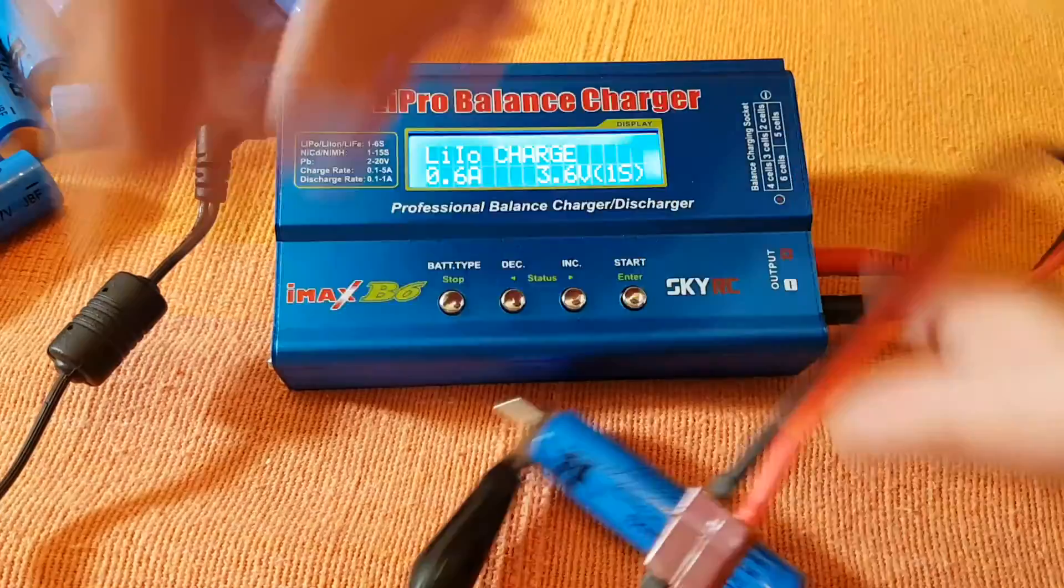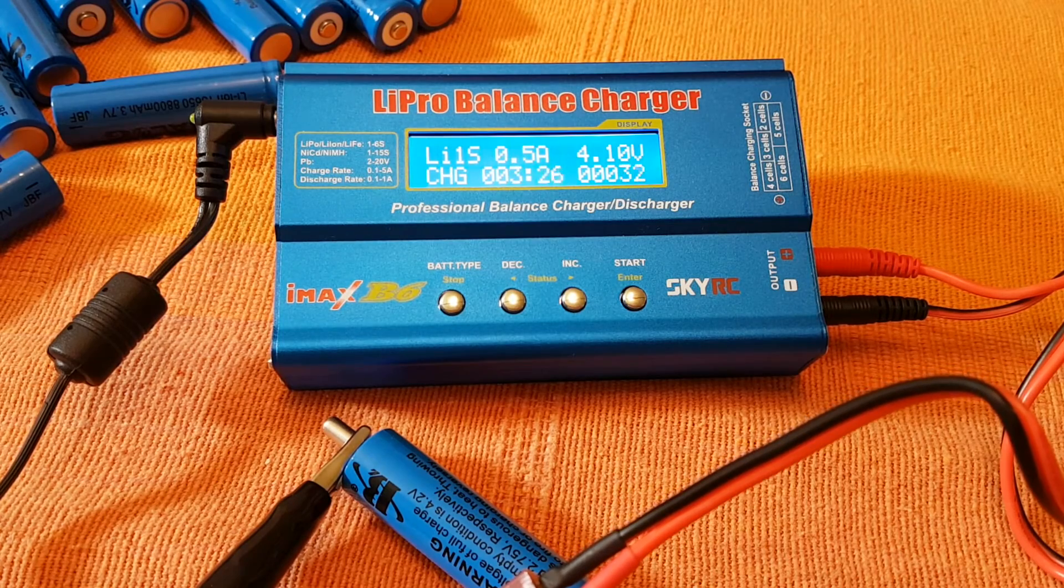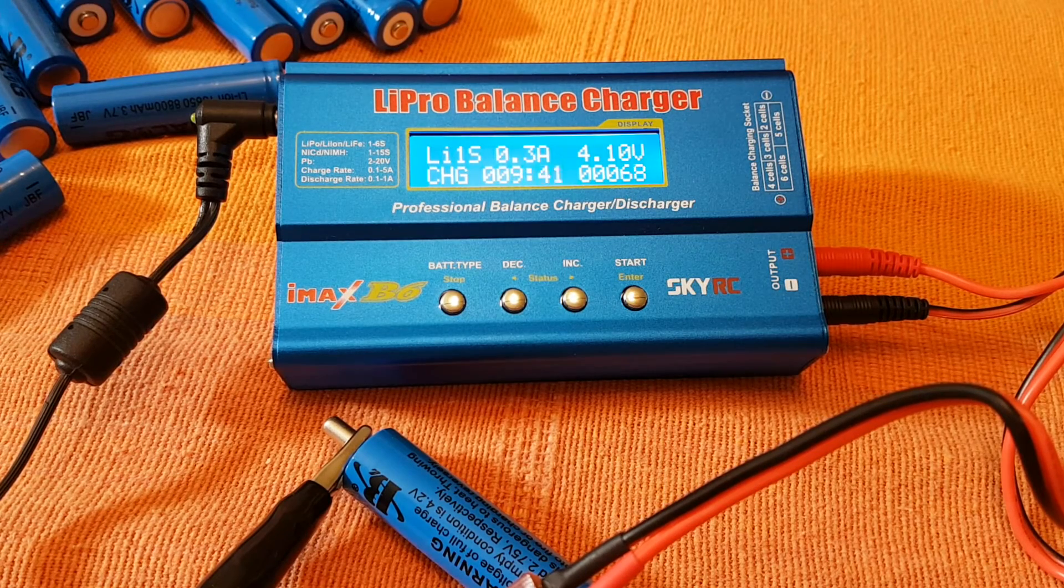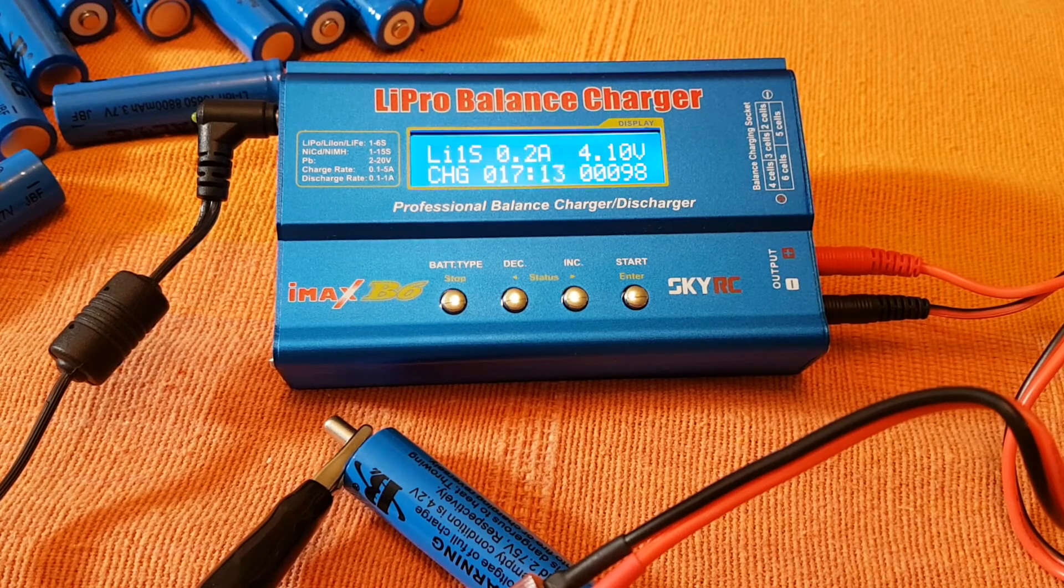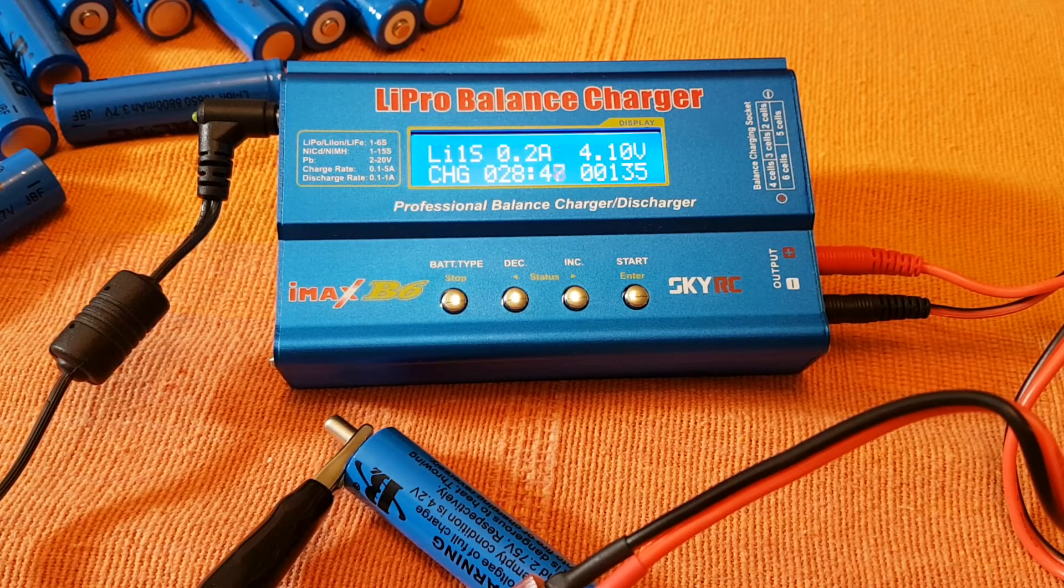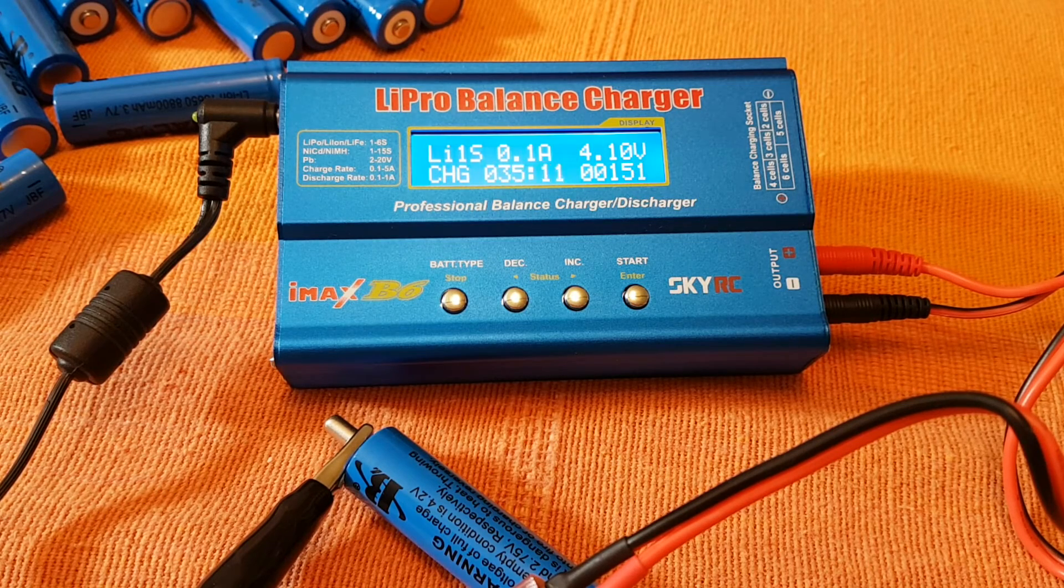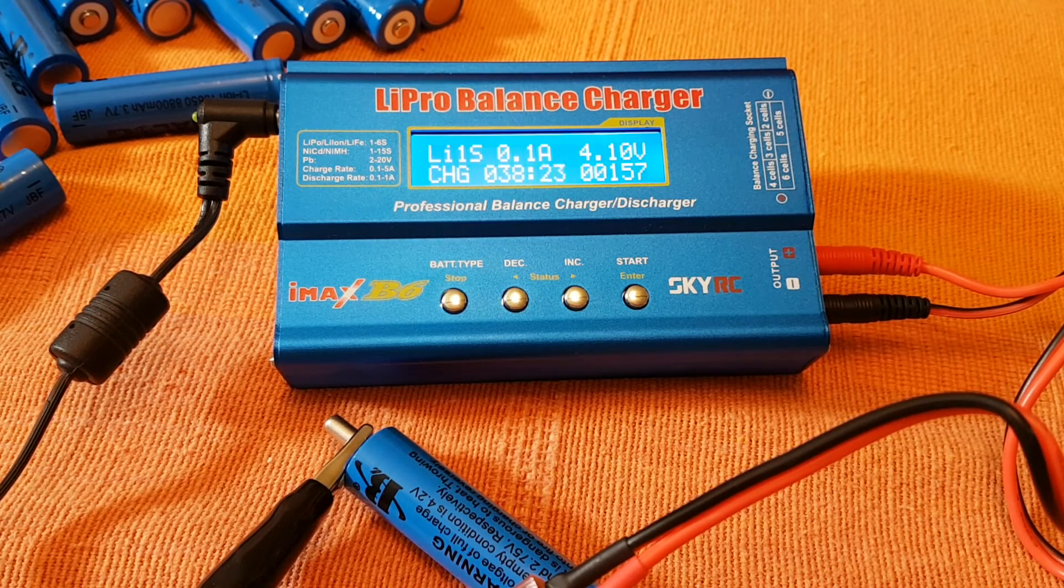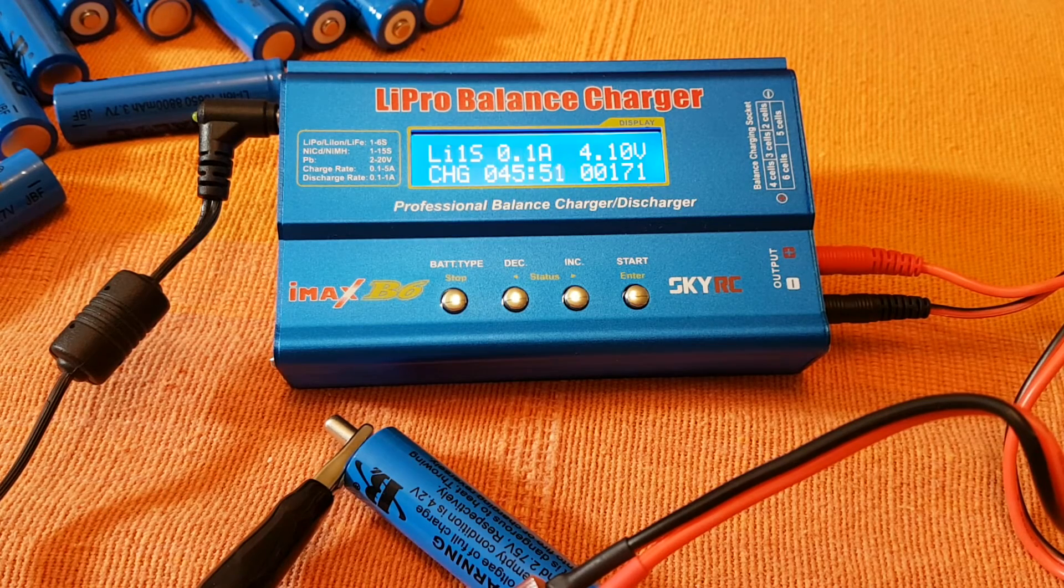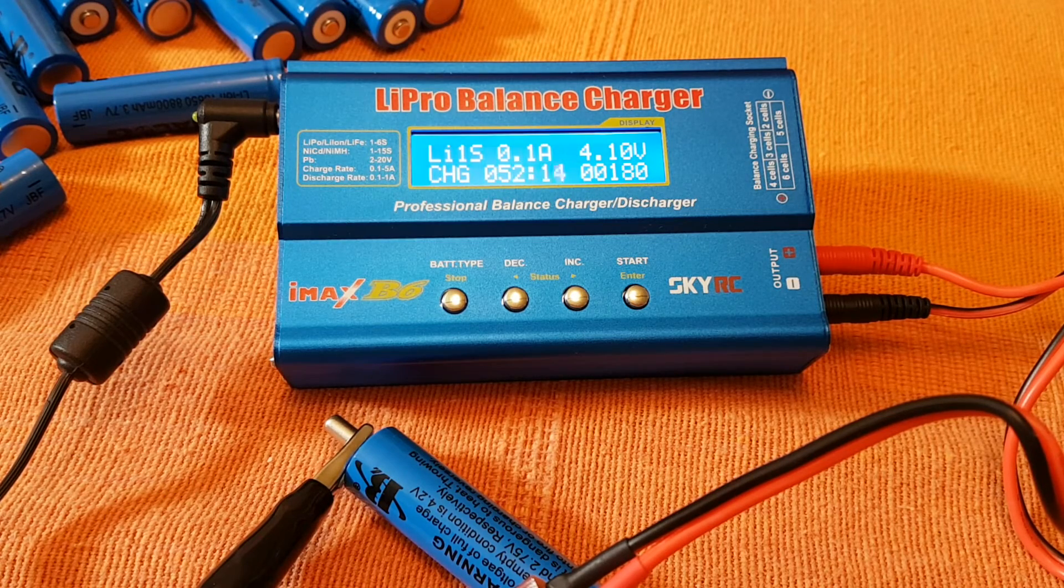So I fired up my IMAX B6. I set it up in the lithium-ion configuration which is slightly different from lithium polymer and I charged up a cell. All the cells were deployed with a voltage under 3 volts. So this is a full charge. I use a fairly common lithium charger, the IMAX B6, which is used both for lithium-ion batteries and LiPo batteries.